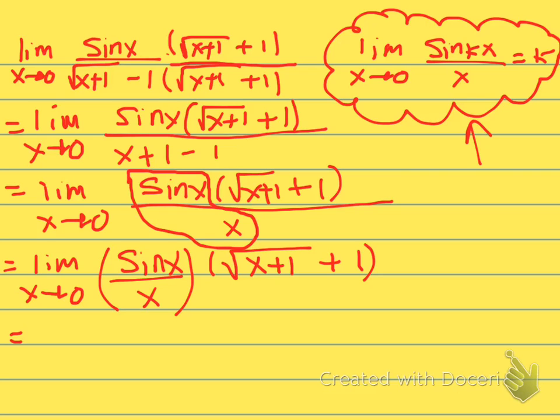The limit of sine X over X is 1, and according to that our K value is 1. For this guy I just need to sub in 0 where I see X, so I got 0 plus 1 plus another 1. The square root of 1 is 1, so I have 1 times 1 plus 1, which is 2. I end up with 2.